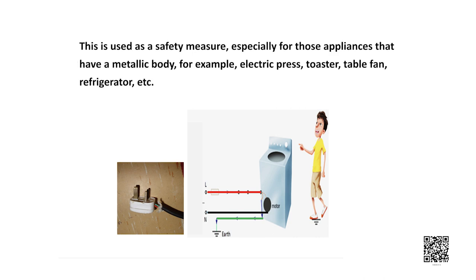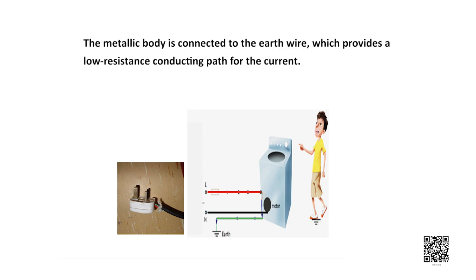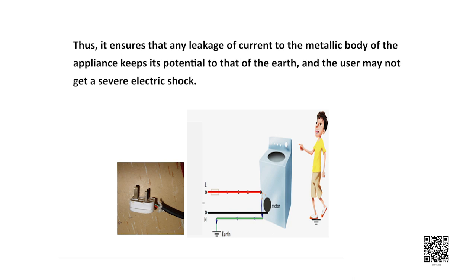This is used as a safety measure especially in those appliances that have a metallic body, for example electric press, toaster, table fan, refrigerator. The metallic body is connected to the earth wire which actually provides a low resistance conducting path for the current. Thus it ensures that any leakage of current to the metallic body of the appliance keeps its potential to that of earth and the user may not get a severe electric shock.